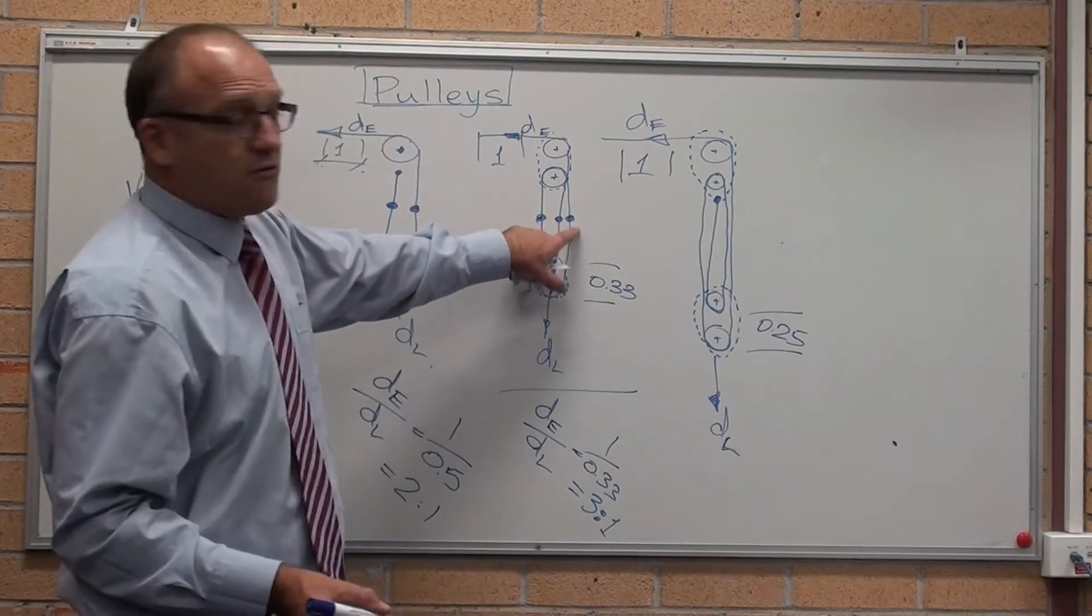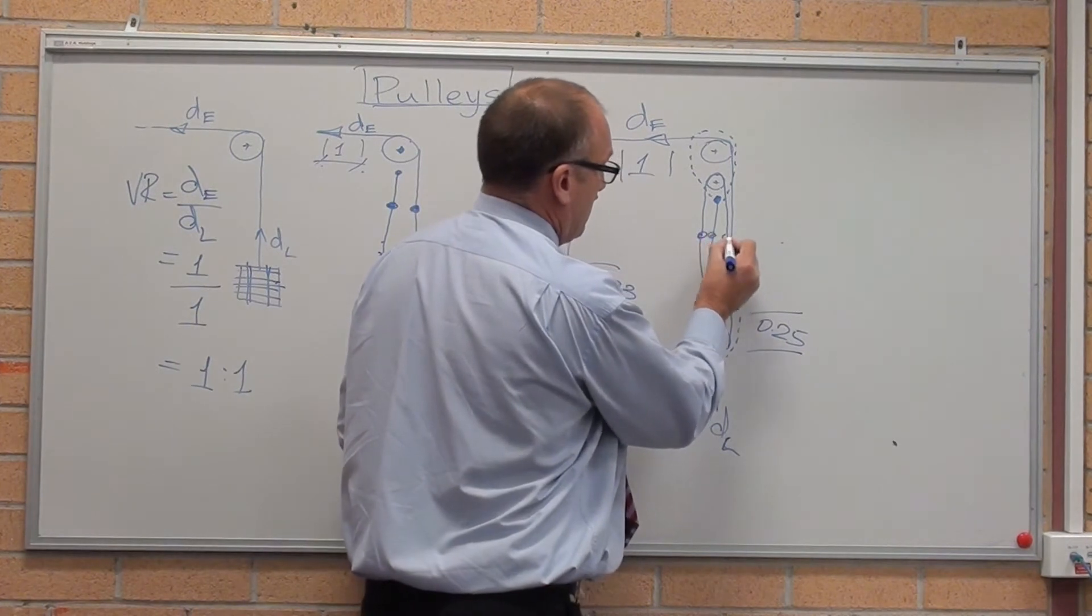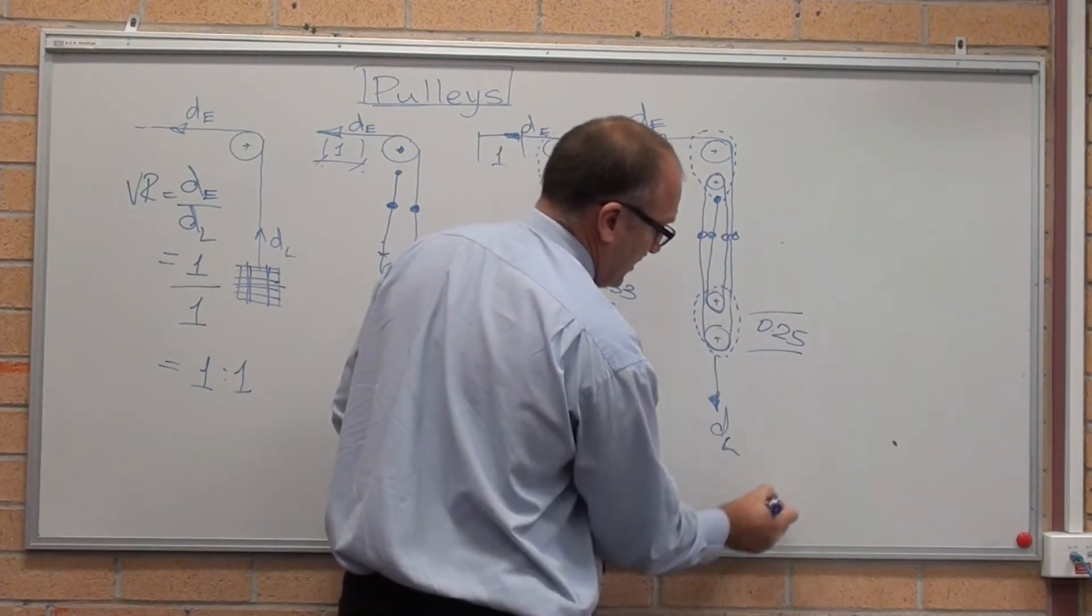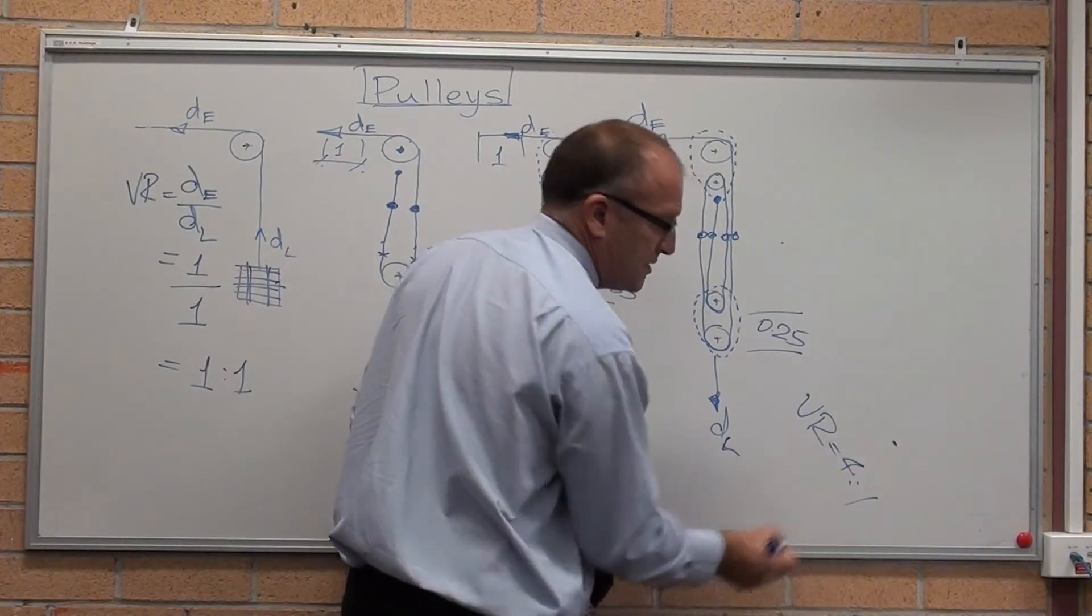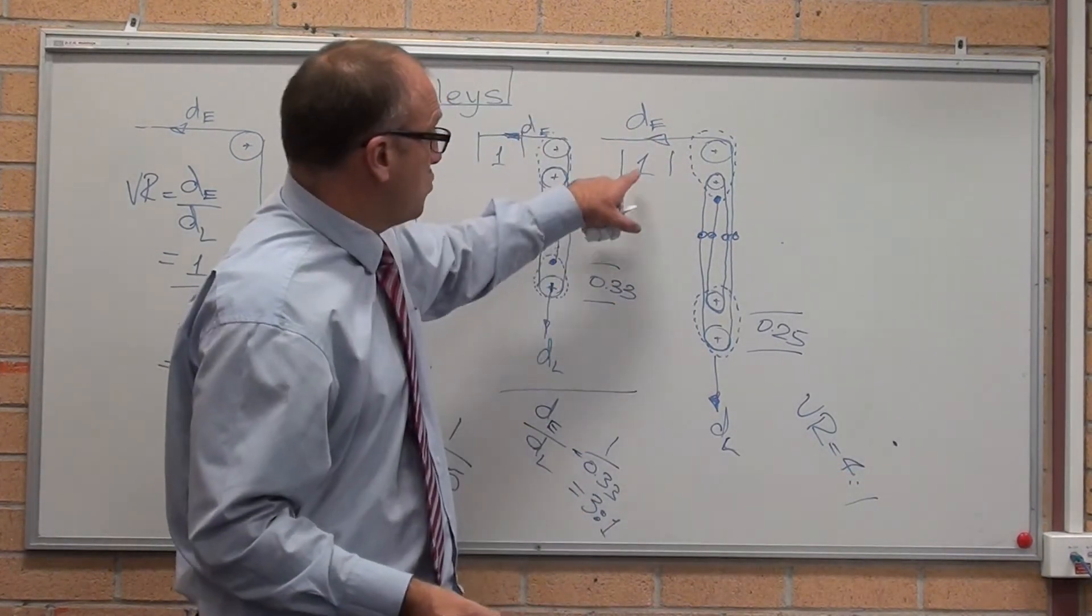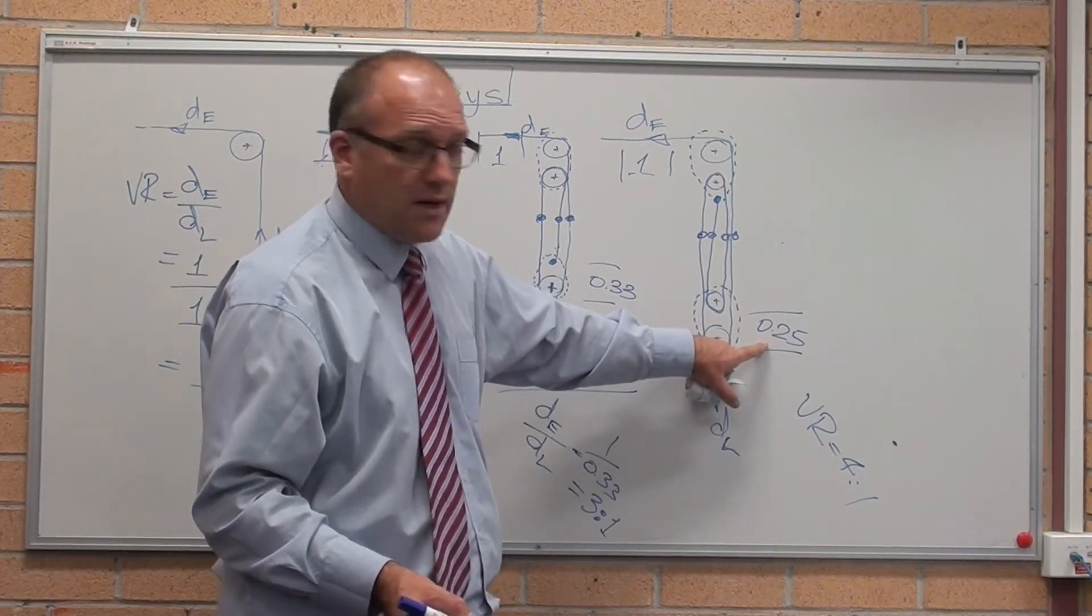One, two, three ropes. Wonder what this one might be. Four ropes. I'll put the answer down here. Velocity ratio equals four as to one. Or it's one divided by 0.25 also equals four as to one.